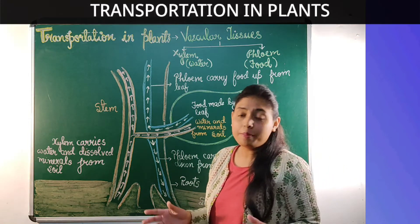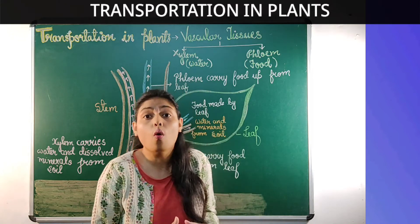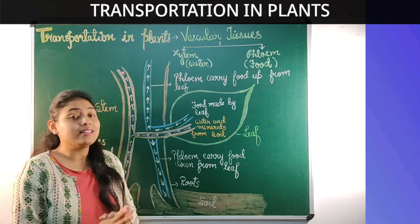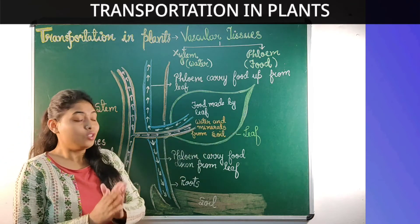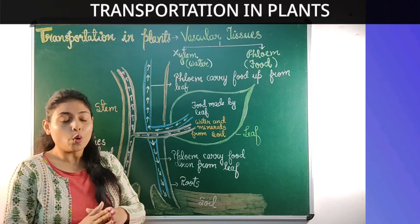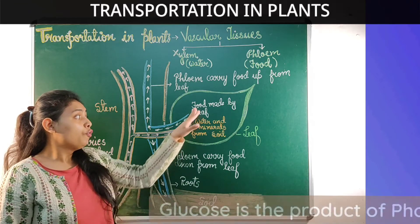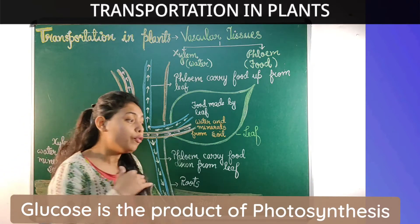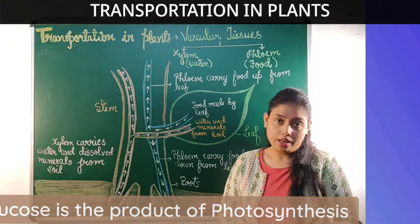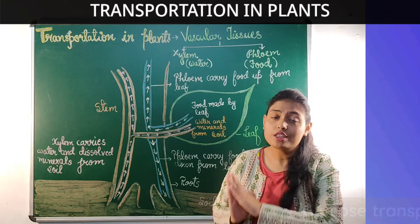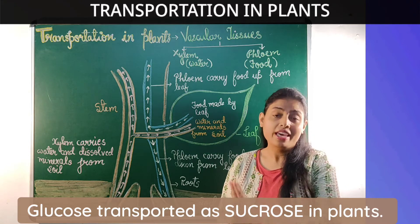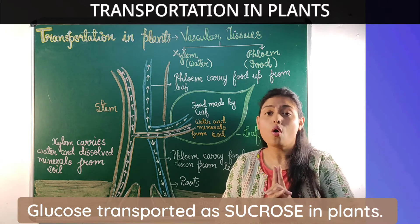Now let us see how food is transported in plants. We know that plants are autotrophs and they prepare their own food by the process of photosynthesis. Photosynthesis occurs in green leaves, so we can say that the leaf is the kitchen of the plant. The food which a plant prepares during photosynthesis is glucose. But when this glucose is transported to different parts of the plant, it is transported in the form of sucrose — S-U-C-R-O-S-E.